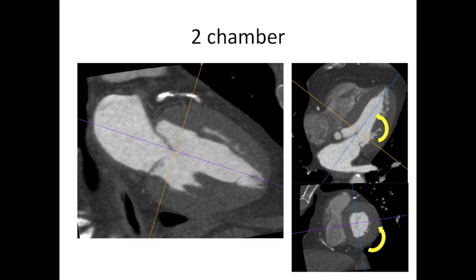The second view is the two-chamber view. This involves turning your axes so that one is going all the way down to the apex of the heart and just adjusting slightly on your short-axis view, giving you a two-chamber view. The two chambers we're talking about here are the left ventricle and the left atrium. This is an important view because it gives you a good look at the mitral valve in action and the left ventricular muscle contracting.